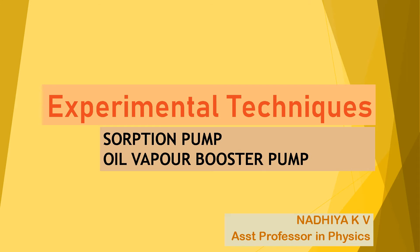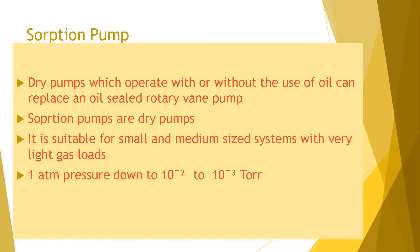Today we will discuss the sorption pump and a high vacuum pump — the oil vapor booster pump. The sorption pump is a roughing pump. Dry pumps, which operate without the use of oil, can replace an oil-sealed rotary vane pump. Sorption pumps are always dry pumps, suitable for small and medium size systems with very light gas loads at atmospheric pressure.